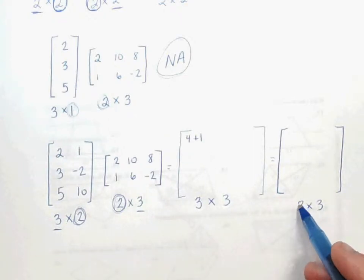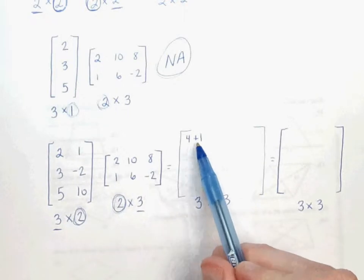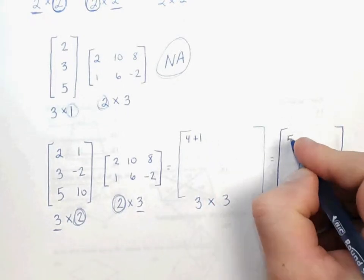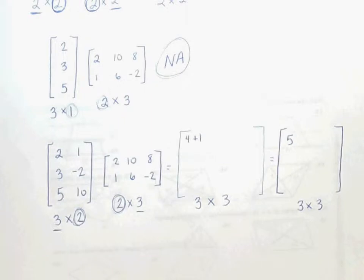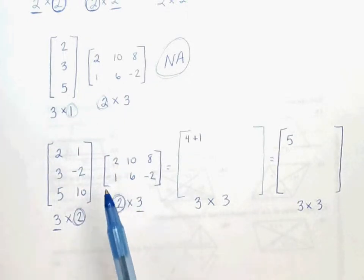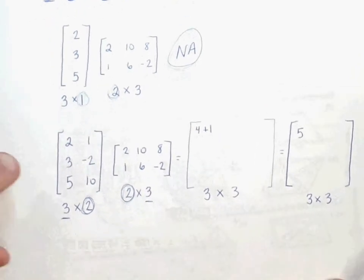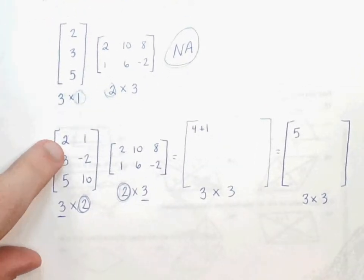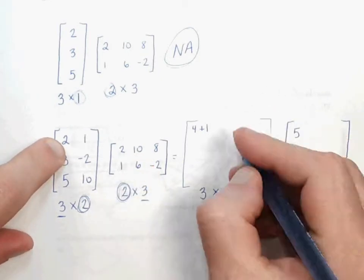We know that it's going to be a 3 by 3. So 4 plus 1 would give us 5, and that would be the first element in our answer matrix. So we used our first row with our first column, so now we're going to go to our second column and use our first row. So 2 and 10 would be our first elements, so 2 times 10 gives us 20.